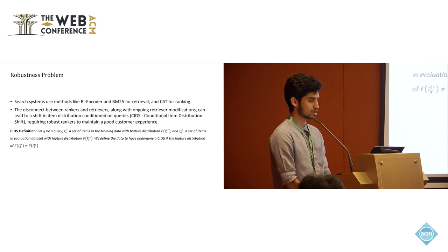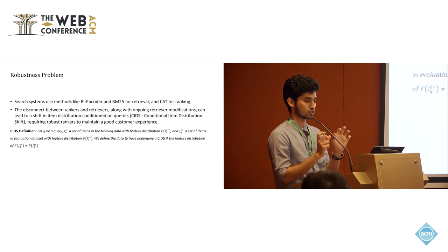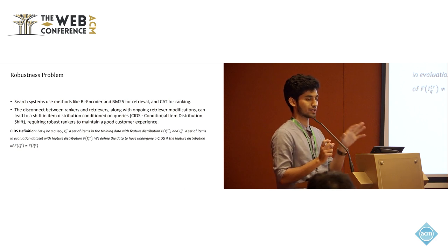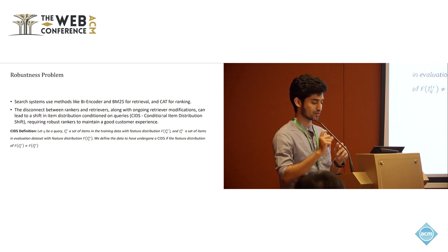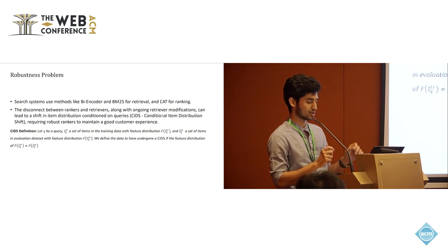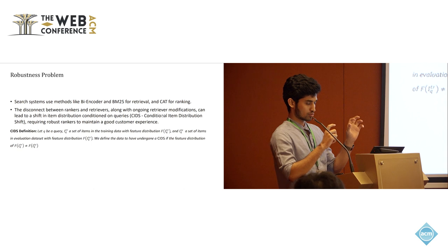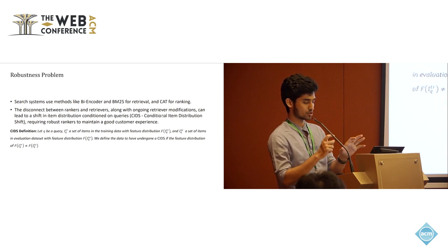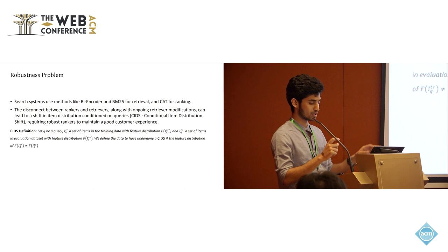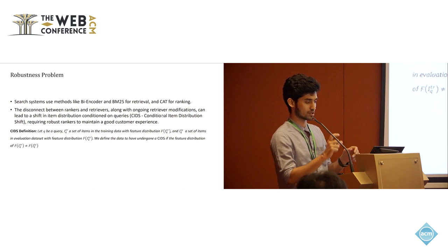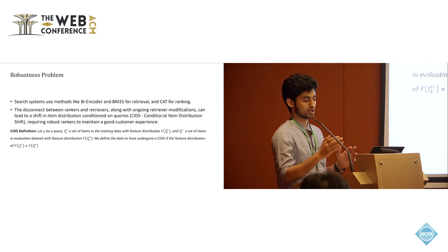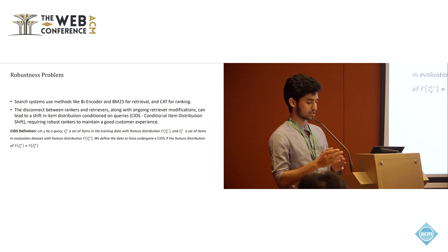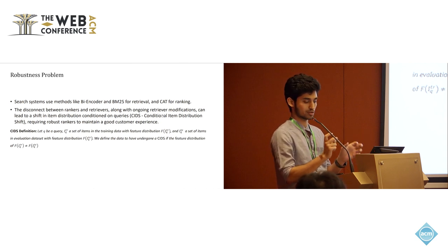Let me cover the definition briefly. It is not about the distribution shift of the train and test set — it is specifically conditioned on queries. Let Q be a query. Let F(I|Q,TR) be the distribution of the train set conditioned on a query, and F(Q,TE) be the distribution of the test set given that query. We say that the dataset has gone through CIDS if these feature distributions differ.